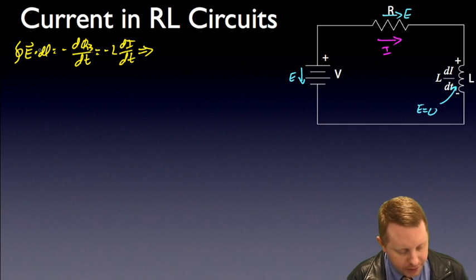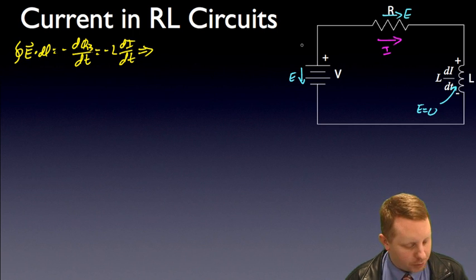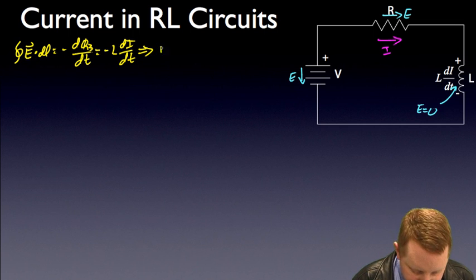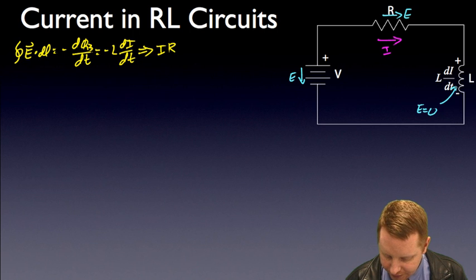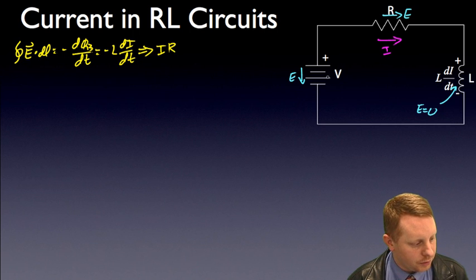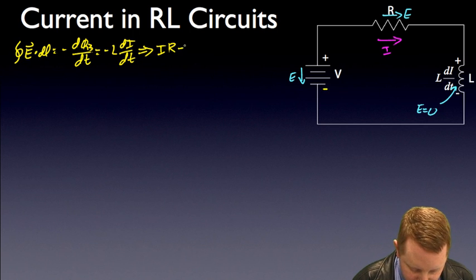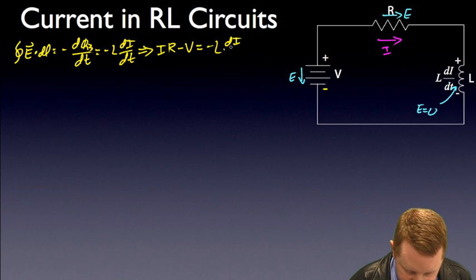As we go around our circuit and look at our electric fields, the integral over the closed loop of E dot dl — starting at the top, that's just going to be IR; no electric field in the inductor so nothing there; and then we come back to our voltage V and we see the negative side first, that's a positive — so IR minus V must be equal to minus L dI/dt.